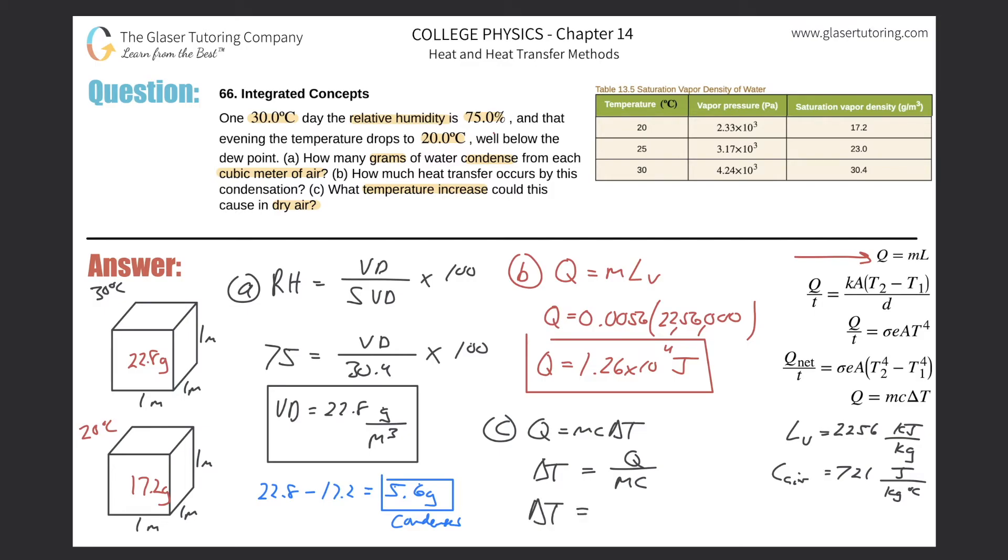So delta T now. So basically now, if I'm talking about temperature increase, the Q value now, technically speaking, this is the amount of heat that transfers, but from the vapor's perspective, it's negative, because it's losing energy. And then the Q now for the air would be positive. So we'll just plug in the positive value divided by the mass in kilograms. Actually, wait a minute. What temperature could this cause in dry air? So hold on one second. What's the mass? We need the mass of dry air.